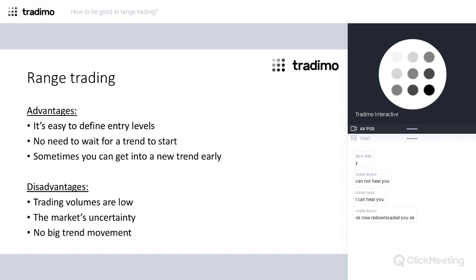We don't need to wait for a trend to start if we choose ranges. Sometimes it can happen that if we bought in the lower part of a range and didn't close the trade, and then the market made a breakthrough to the upside, we managed to join an uptrend at the earliest time. However, the main idea is to close the trade once the price gets to the opposite border of a range.